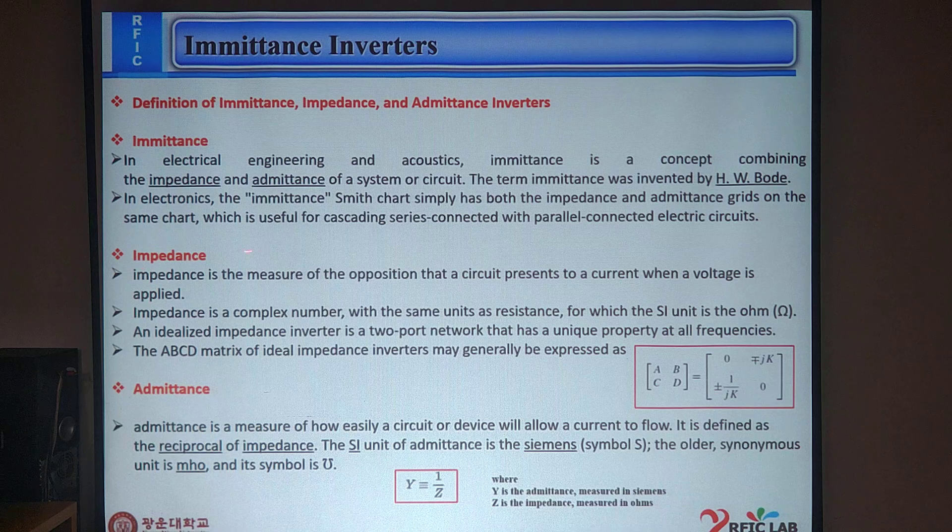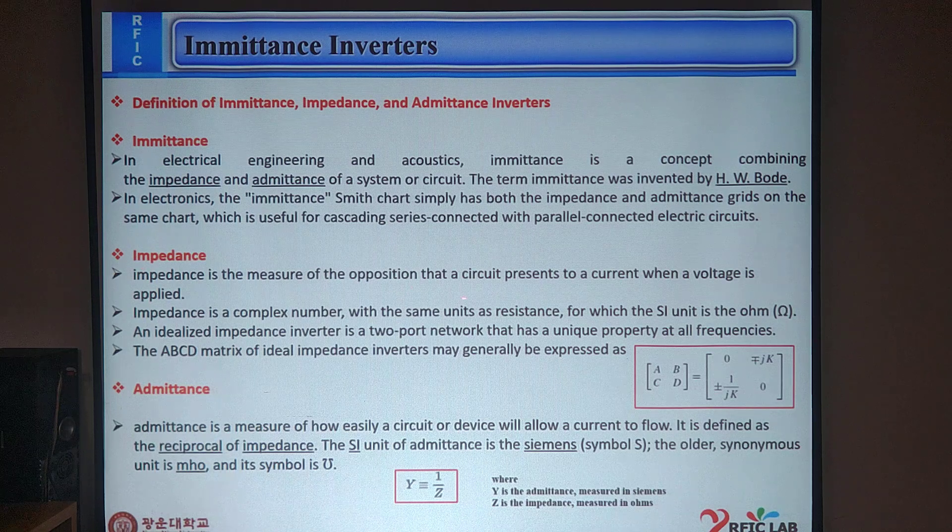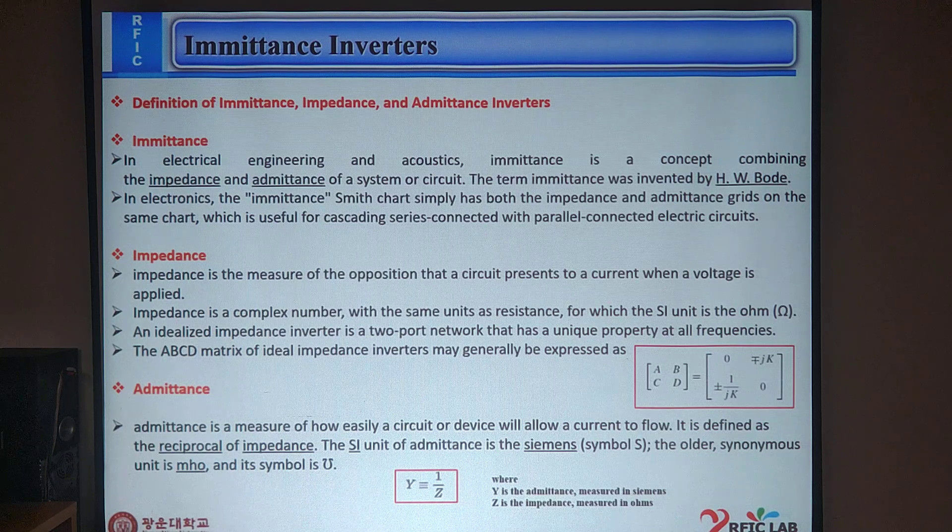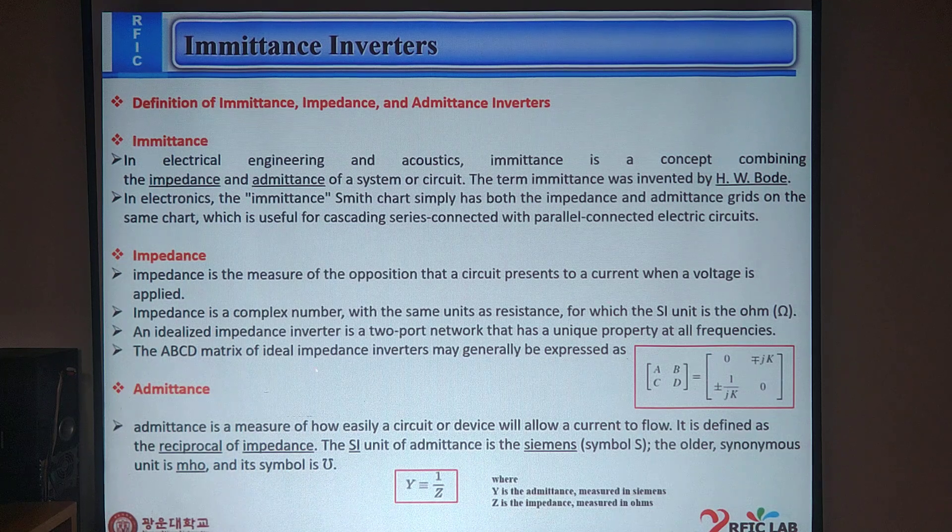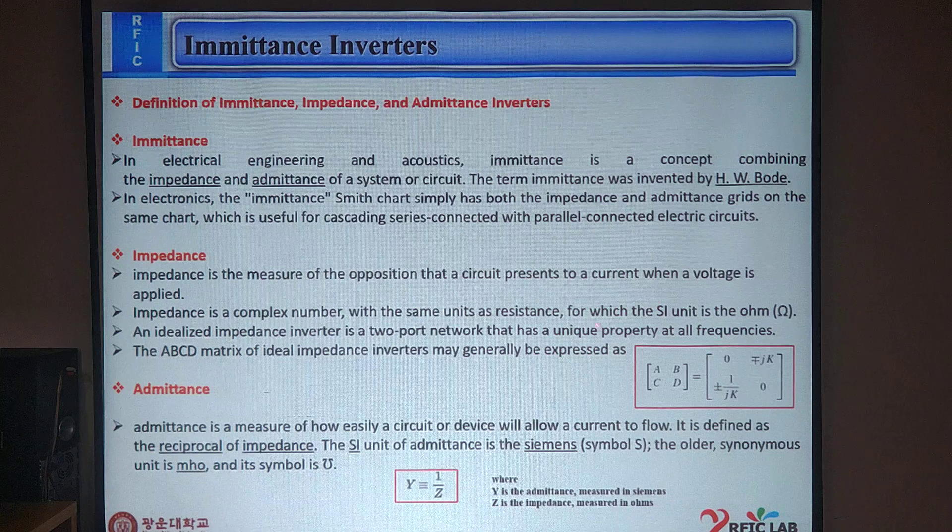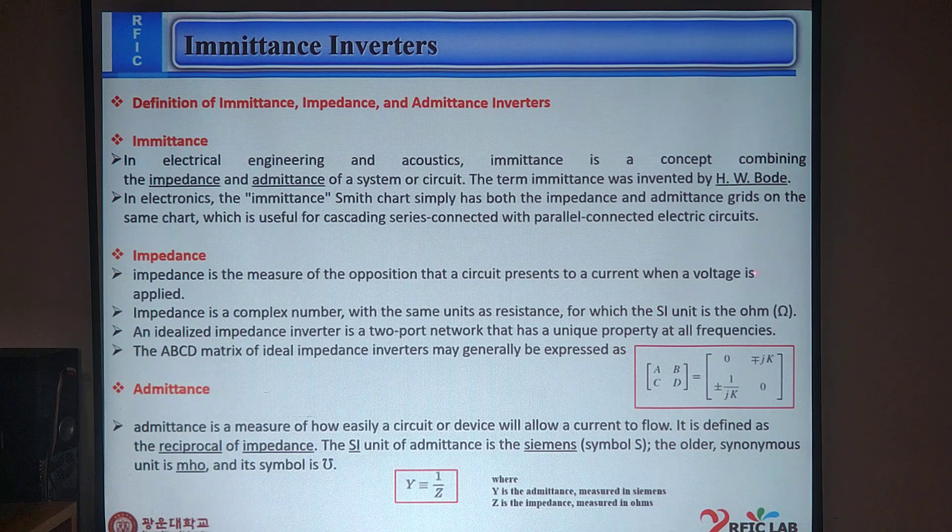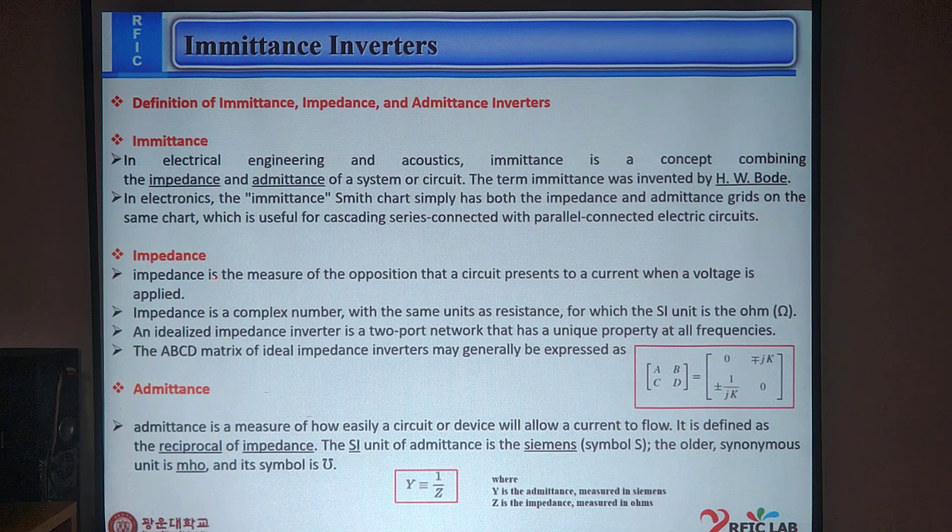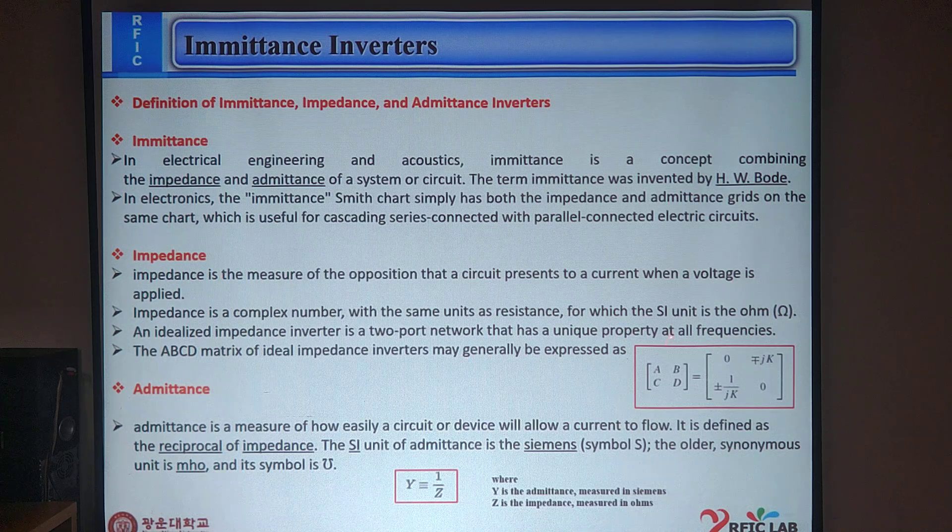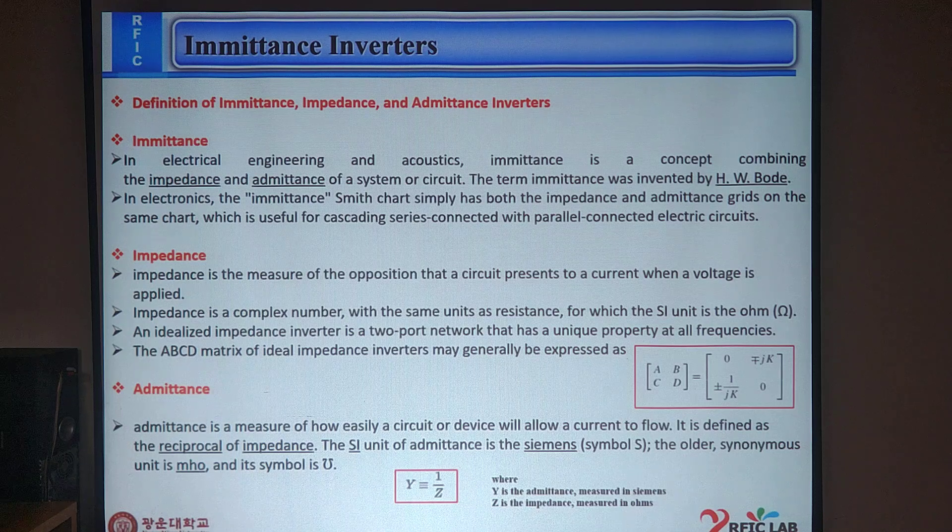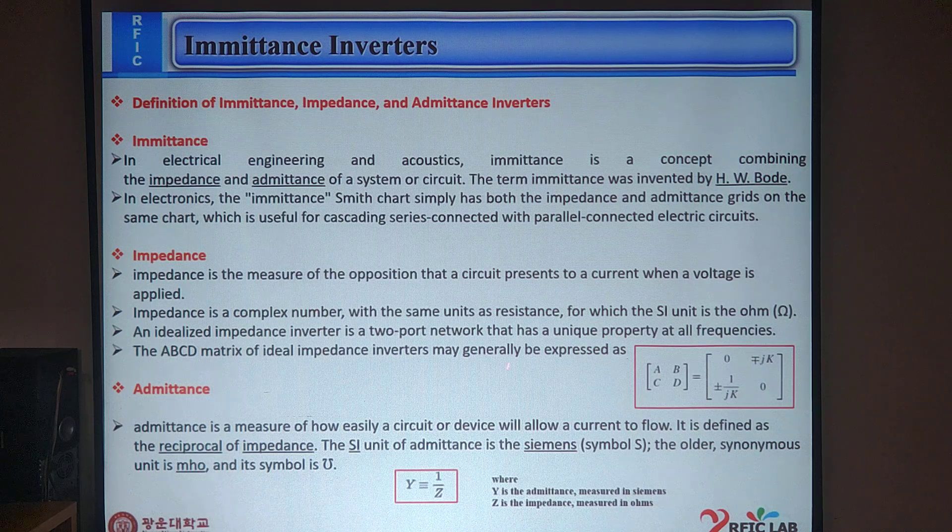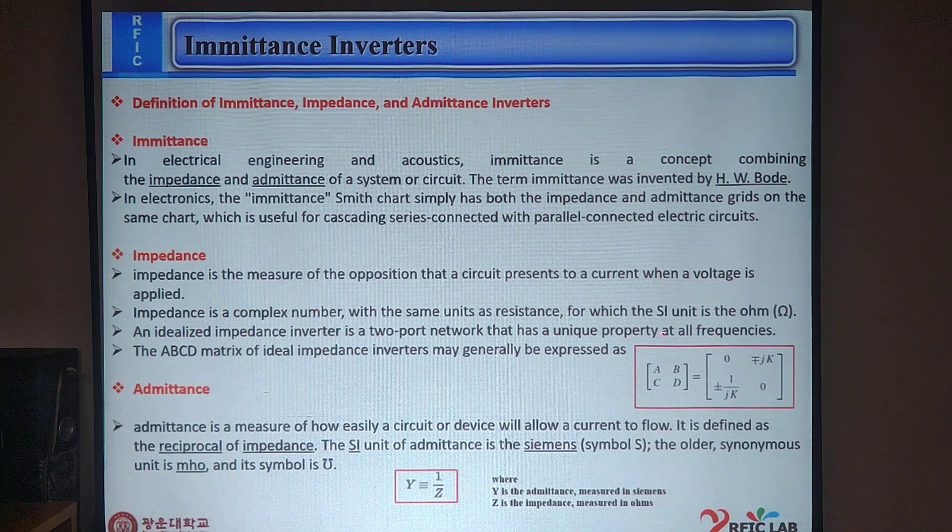What is Impedance? Impedance is a measure of opposition that a circuit presents to a current when a voltage is applied. Impedance is a complex number with the same unit as resistance, for which the SI unit is in Ohm. An idealized impedance inverter is a two-port network that has a unique property at all frequencies. The ABCD matrix of ideal impedance inverter may generally be expressed as this formula.